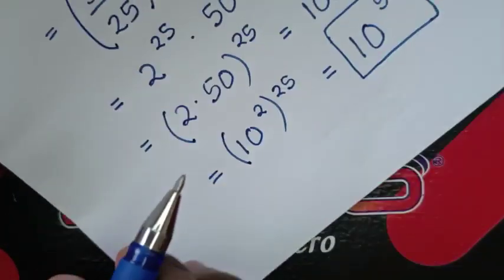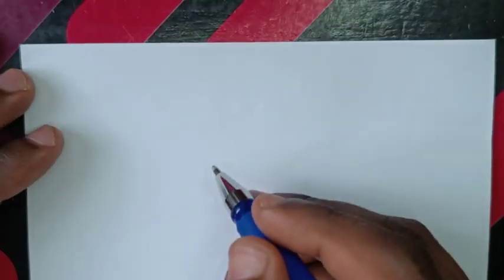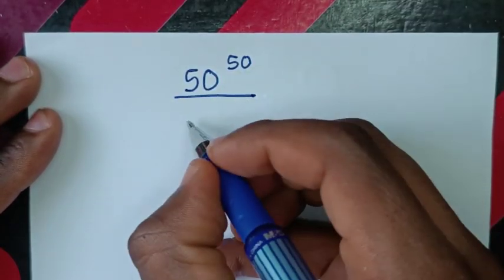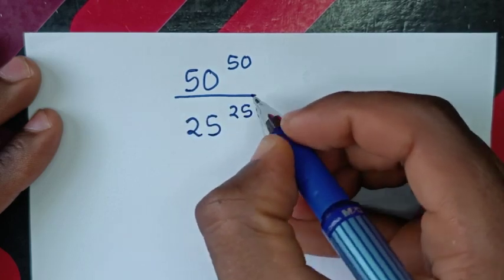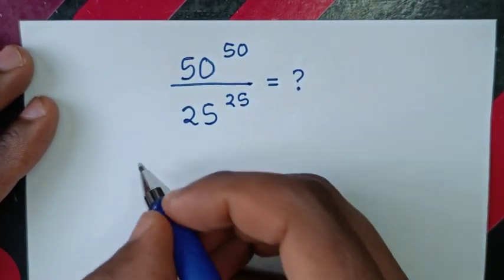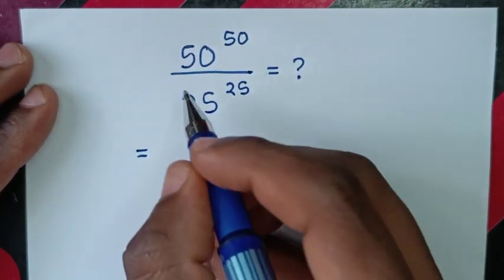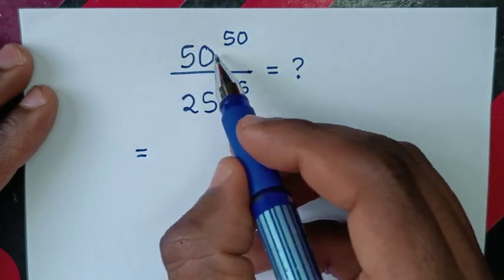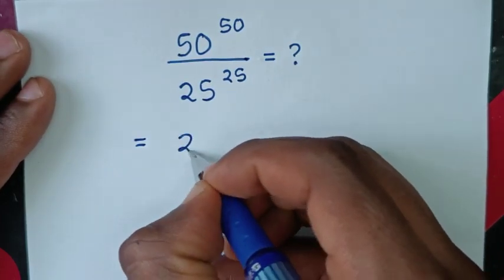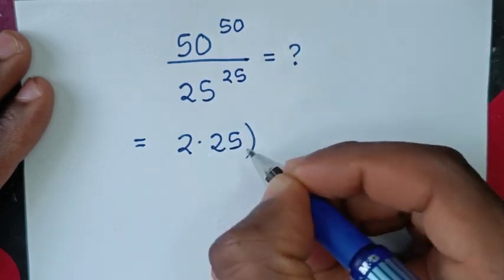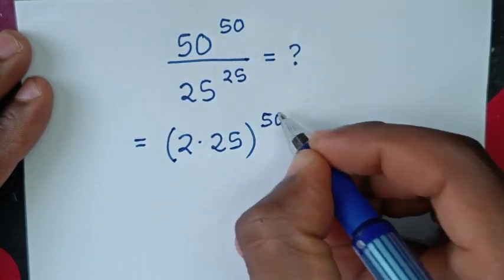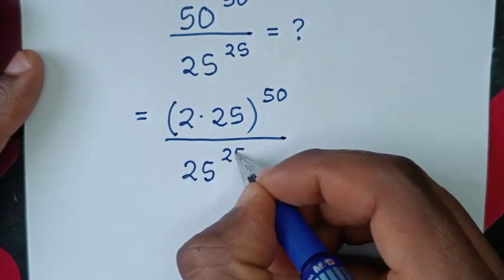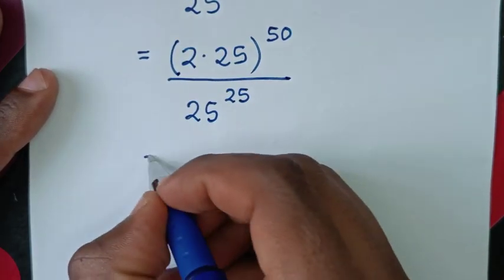To solve using another method, starting from the problem 50 power of 50 over 25 power of 25. Here we will change the base: 50 is the same as 2 times 25, so it becomes 2 times 25, bracket to the power of 50, over 25 power of 25.